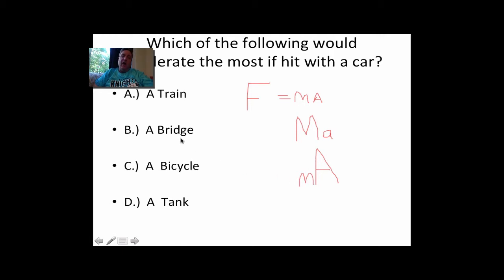So I want to know what's got the smallest mass: a train, a bridge, a bike, a tank. Which of those has the least amount of mass? So it will accelerate the most with the same force. The answer is going to be bike. These three things have more inertia than a bike, because inertia has to do with how much mass there is. But if it's got little mass, little inertia, it's going to accelerate more. That's what Newton's second law is all about.